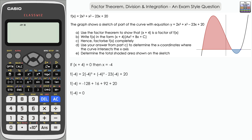You also need to include a short conclusion confirming how the factor theorem shows this is a factor: as f(-4) = 0, therefore x+4 is a factor of f(x). You need that conclusion to finish Part A.